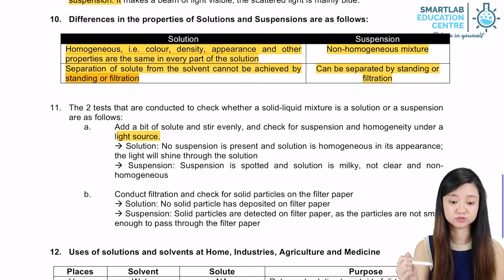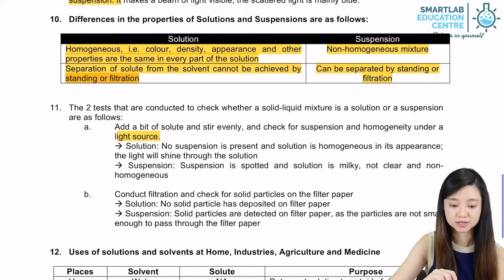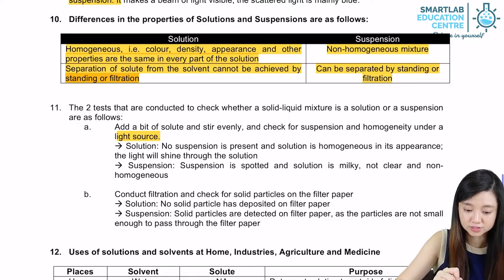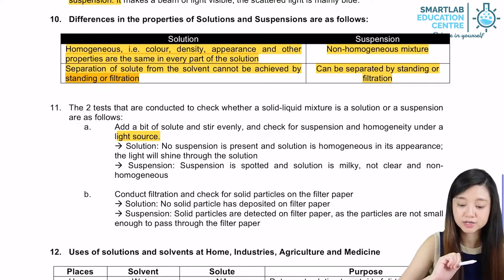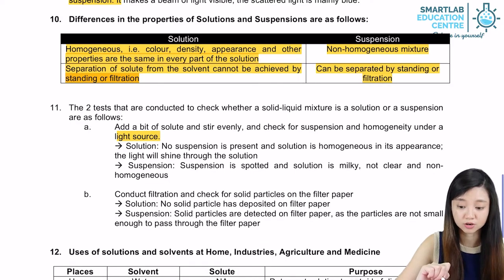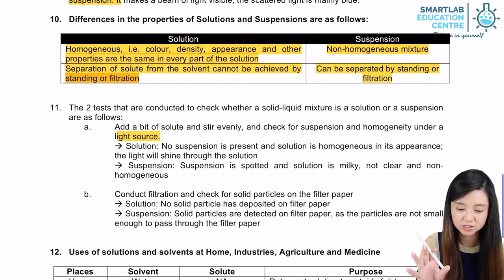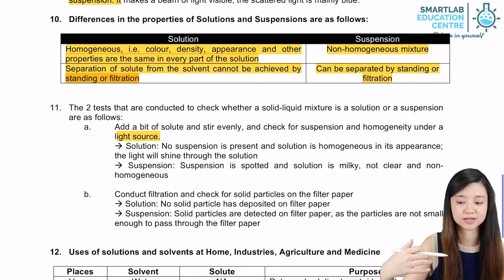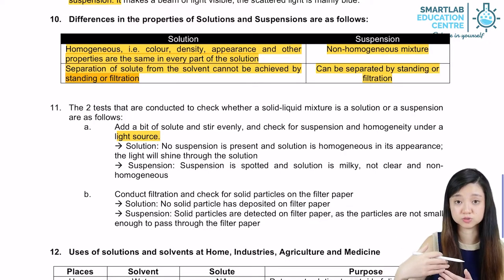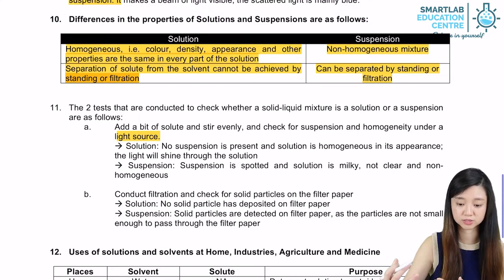For a solution, if you shine a light through it, the light will pass through clearly. But for a suspension, if you shine a light through it, it is not clear — the suspension appears milky and the light is not able to shine through the whole suspension.